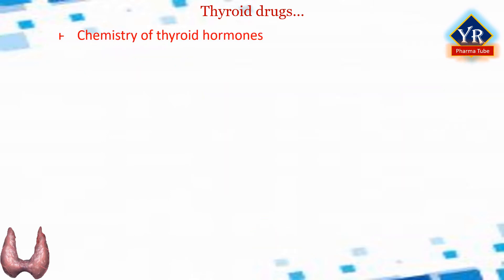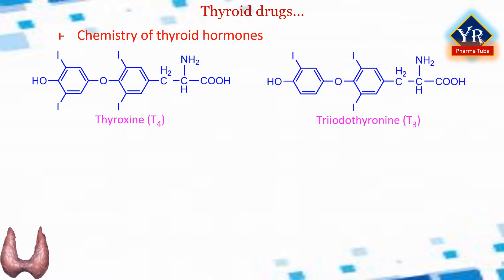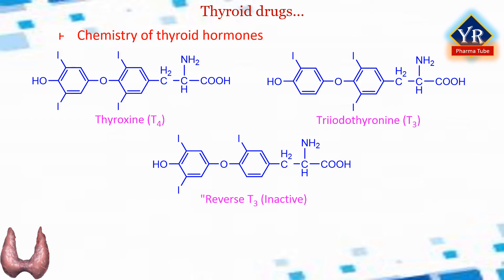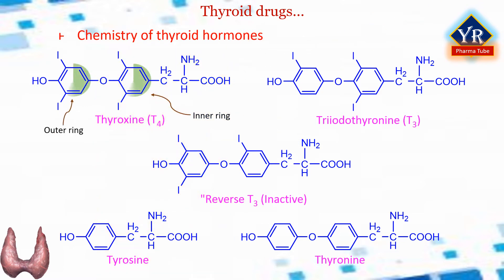Chemistry of thyroid hormones. The structural formulas of thyroxine and triiodothyronine as well as reverse triiodothyronine are shown here. All of these naturally occurring molecules are levo-isomers. All these hormones are iodine-containing amino acid derivatives of thyronine; in other words, they are derivatives of tyrosine bound covalently to iodine. Iodine is essential for the manufacturing of these hormones. The thyroid hormones are basically two tyrosines linked together with the critical addition of iodine at three or five positions on the aromatic rings.